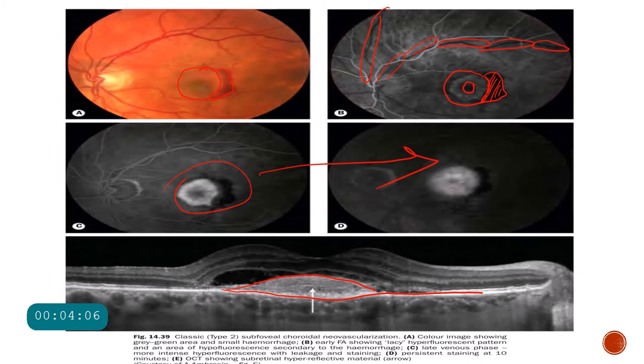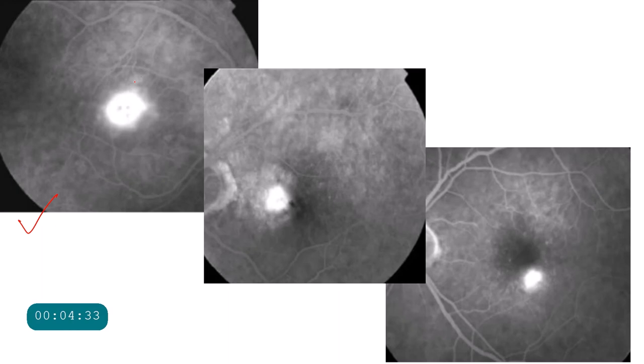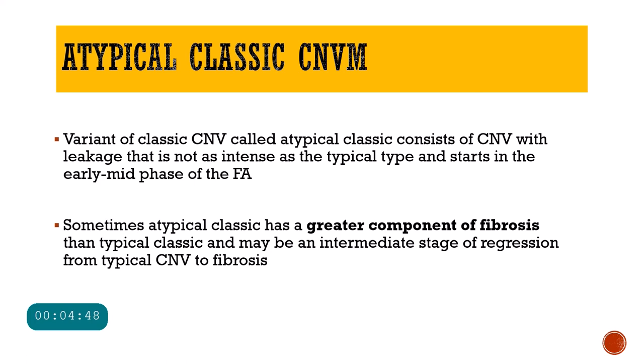The classic CNVM, depending on the location of the leak in relation to the fovea, can be classified into three types: subfoveal, meaning located right below the fovea; juxtafoveal, meaning closer to the center of the fovea — that is, less than 200 microns from the foveal center; and extrafoveal, where the leakage is more than 200 microns from the foveal center. The pictures demonstrate subfoveal, juxtafoveal, and extrafoveal classic CNVM respectively.